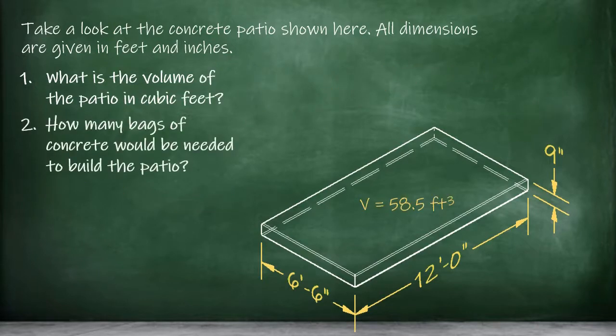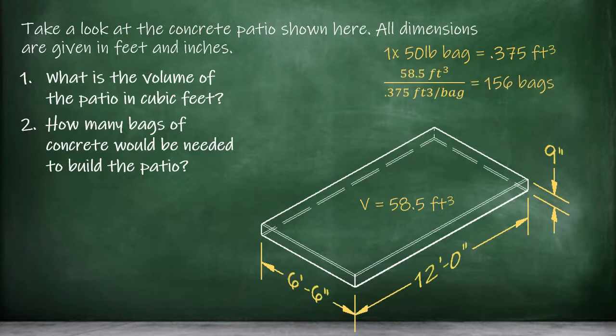How many bags of concrete would be needed to build the patio? We already saw that a 50-pound bag of concrete mix will make .375 cubic feet of concrete. So, 58.5 cubic feet divided by .375 cubic feet per bag tells us that we need 156 bags of concrete mix to make the patio. This answer happens to be a nice even number of bags, but if your answer had come out to an incomplete number of bags, like 156.2, we would need to round our answer up to the next whole bag of concrete mix, since we wouldn't just be able to buy two-tenths of a bag from the hardware store.